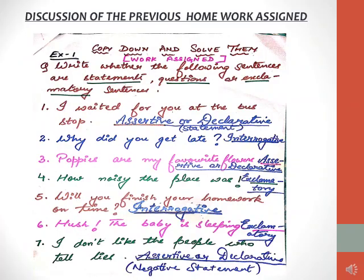Let's discuss the previous homework assigned to you — Exercise 1 which I gave you in your previous class. Number 1: 'I waited for you at the bus stop.' The answer will be assertive or declarative. Number 2: 'Why did you get late?' With the question mark, we come to know that it is a question being asked, so the answer will be interrogative.